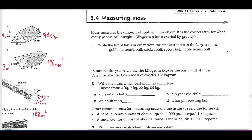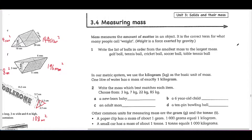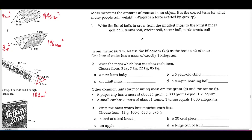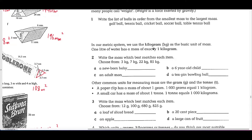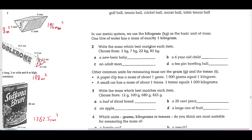Hello everyone, welcome back. In today's lesson we're going to learn a new topic — it's not really a new topic because this is what you probably would have already learned in year 7, and it's called measuring mass. As you probably already know, mass is the amount of matter in an object. It is the correct term of what many people call weight, and your mass is meant to be measured in kilograms. I'm going to go through some of these questions quickly because I feel you probably already know how to do these, but let's get started.